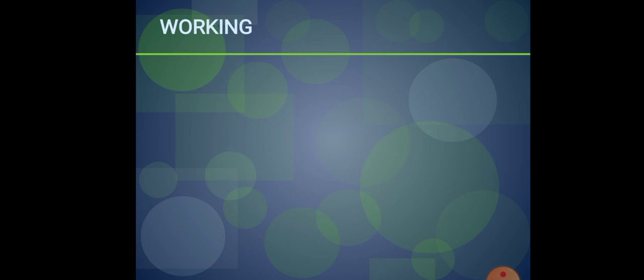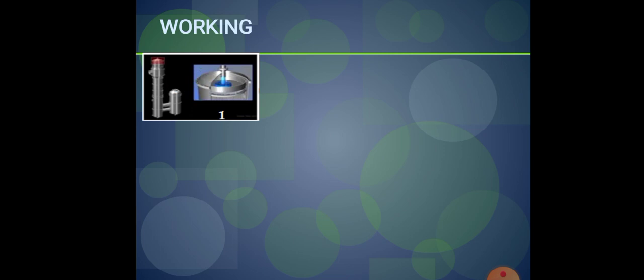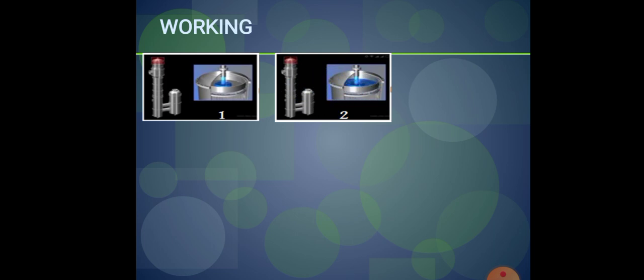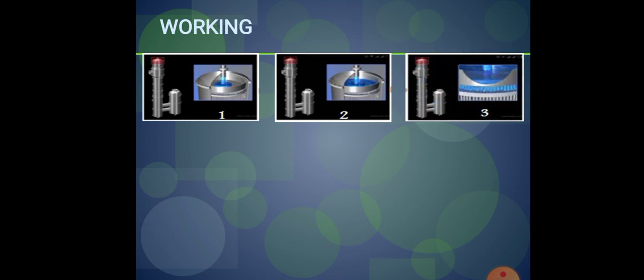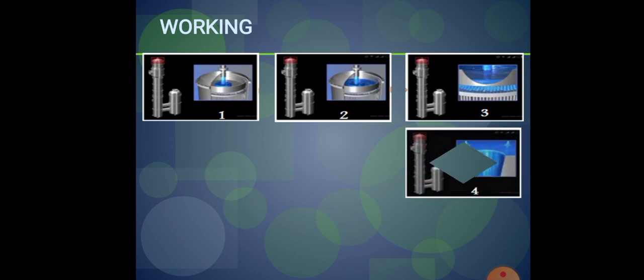Working step by step: first, feed is introduced at the top of the evaporator. Then the feed is allowed to distribute evenly throughout the evaporator. When uniform distribution occurs, the feed forms a film on the walls of the tube, and that film runs downward.